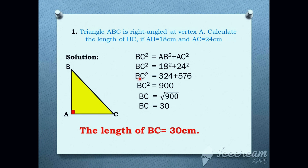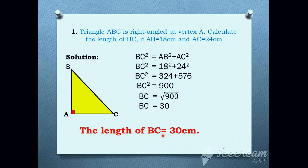So: BC square is equal to 18 square plus 24 square. That is, 18 into 18 equals 324, plus 24 into 24 equals 576. BC square is equal to 324 plus 576, which gives 900. Now we have the value of BC square, that is 900. But the question asks for the length of BC, not BC square. So we take the square root of 900, which equals 30. Therefore, the length of BC is equal to 30 cm.